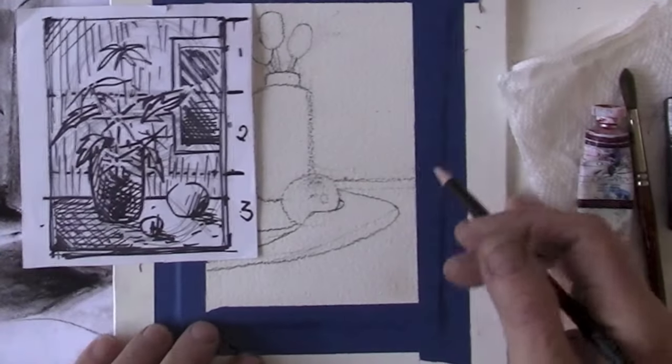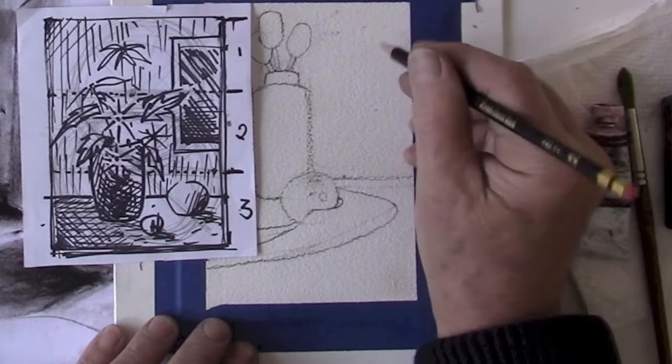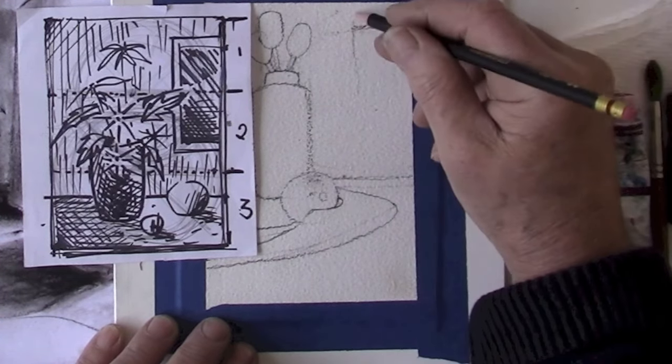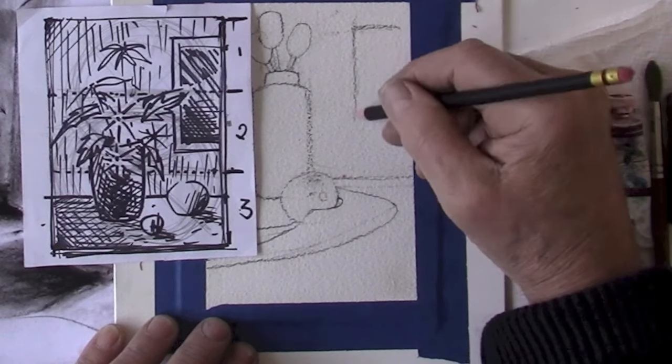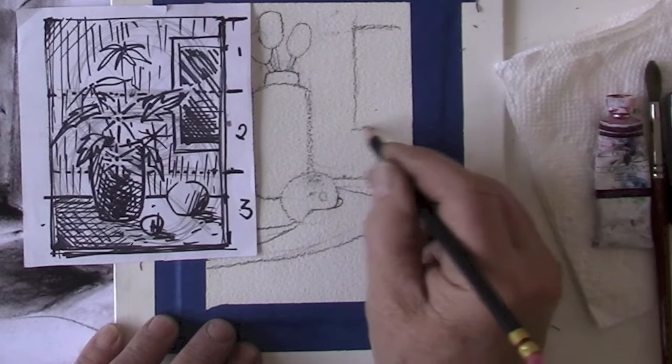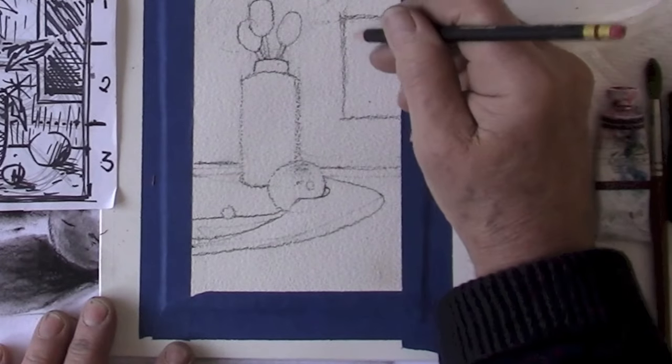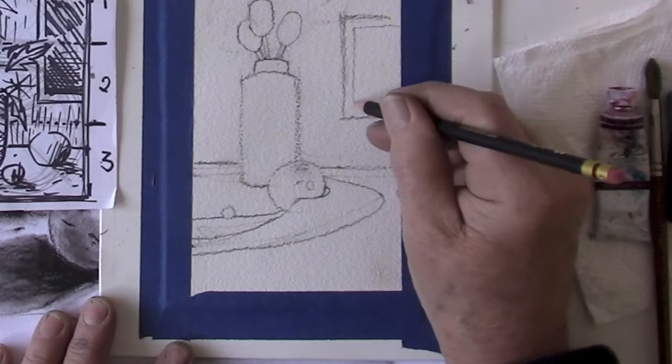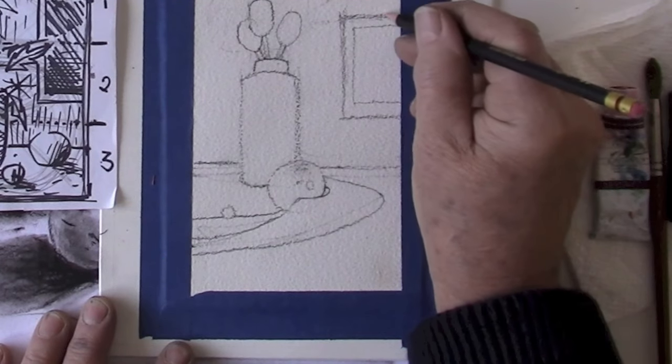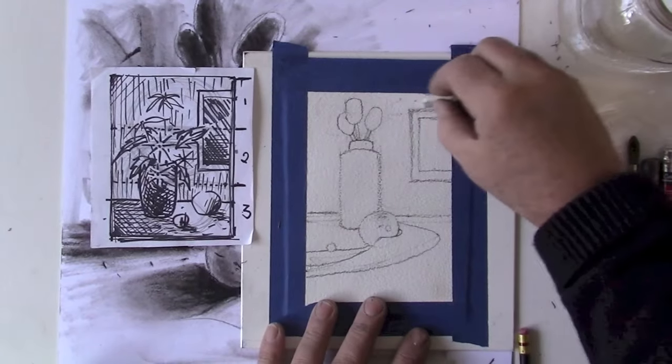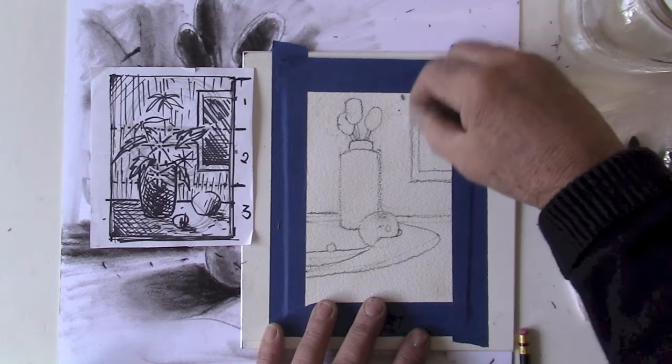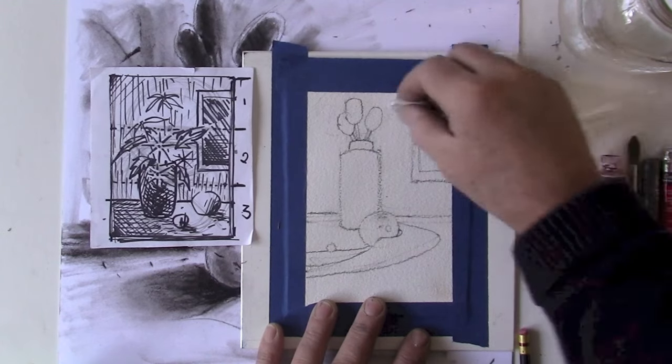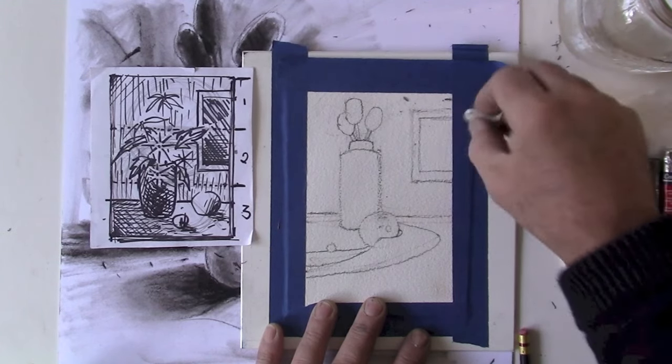Okay, so now what I've decided here is to add the little window which eventually will be a mirror. But I won't really know it's going to be a mirror until near the end of the painting. Okay, there's our basic drawing.